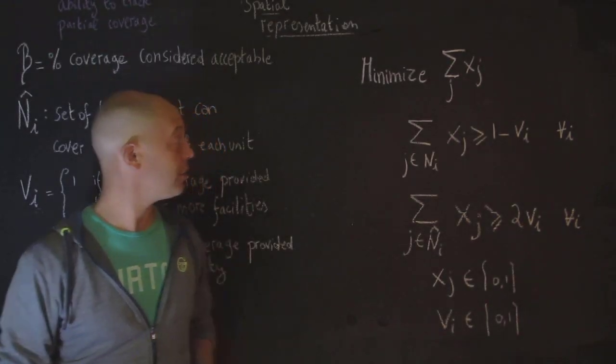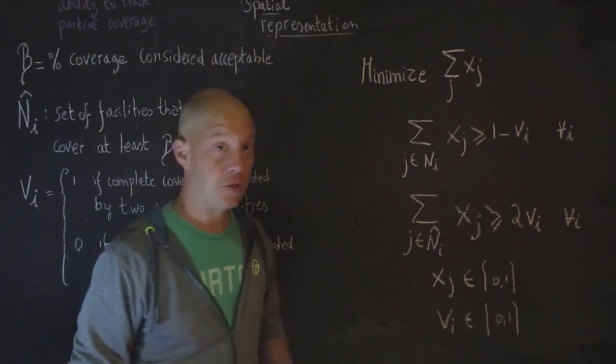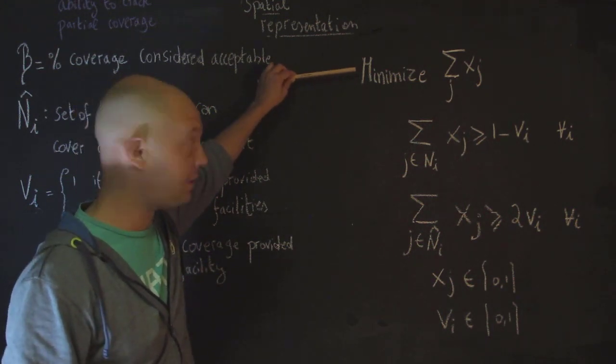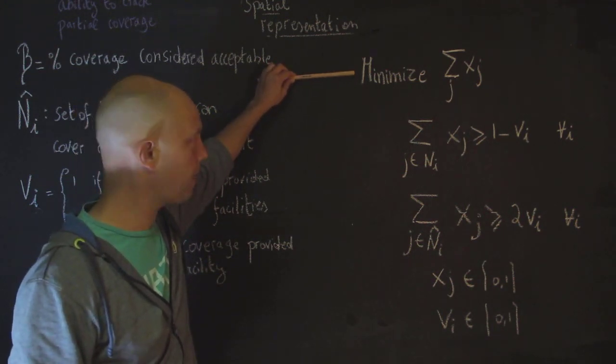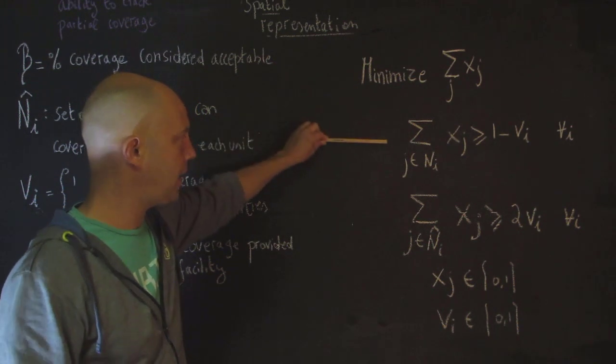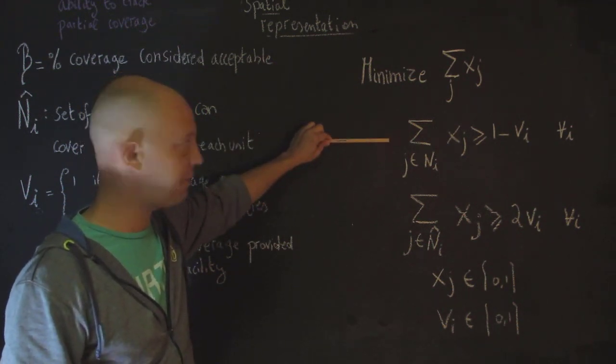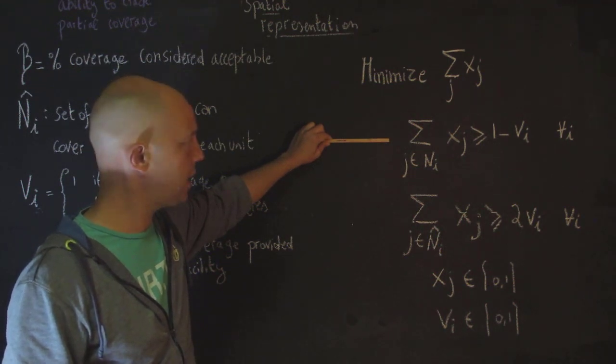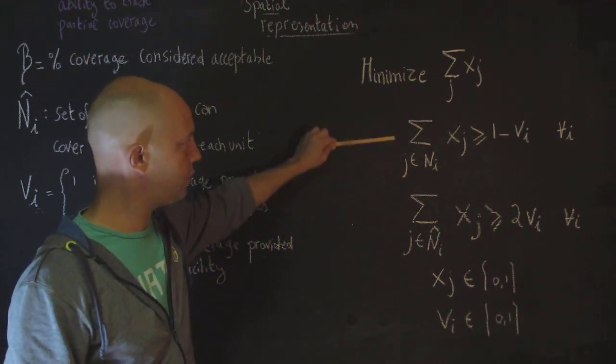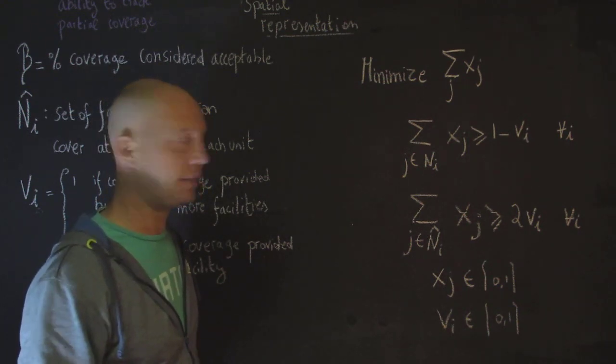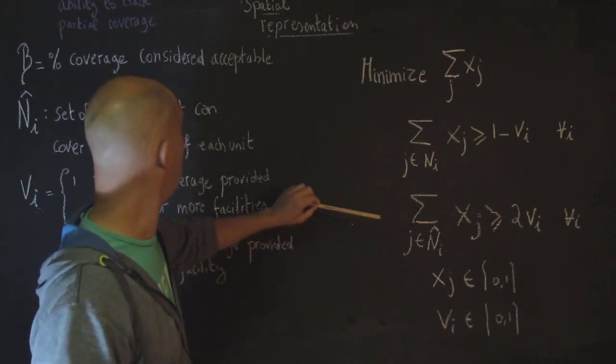Okay, we are going now into the formulation of the problem. So, this is similar to a set covering problem, where we are trying to minimize the number of facilities that need to open. And then we have two constraints. Now, it's slightly different than what we have seen before, but it does make a lot of sense. When you look at those two, they are really enforcing this idea of partial coverage.